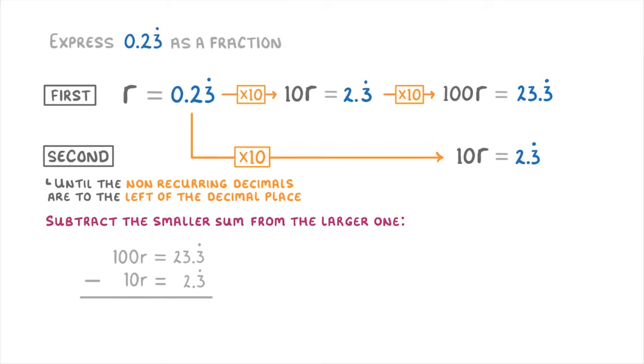So 100r minus 10r is 90r, and 23.3 recurring minus 2.3 recurring is 21, meaning that we end up with 90r equals 21. And importantly we've completely removed the recurring decimal part which is the main aim.